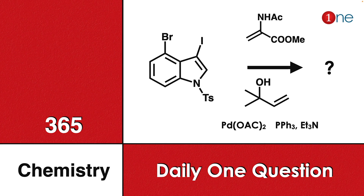Welcome to One Chemistry. This is the 365 Chemistry Series — daily chemistry problems for you. Here you have a compound with iodine, bromine, and tosylate reacting with an alkene that has an amine and an ester. In the next step, you react with an alcohol containing an alkene, and further use palladium and phosphine. You need to find what the final product will be.